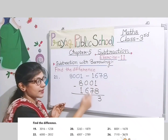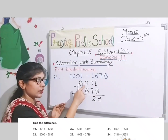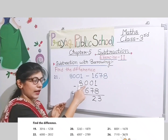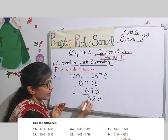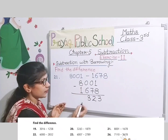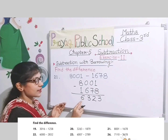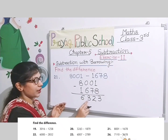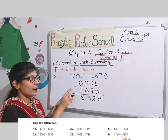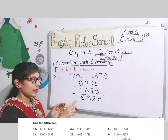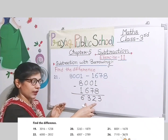Ab yaha 0 kya ho ga? 9 — because isne isse borrow diya. 9 minus 7 we get 2, and this is also 9. 9 minus 6 we get 3, and 7 minus 1 we get 6. So the answer we get is 6323. Iss method se aap numbers ko column mein arrange karenge, then subtract karke difference find out karenge.